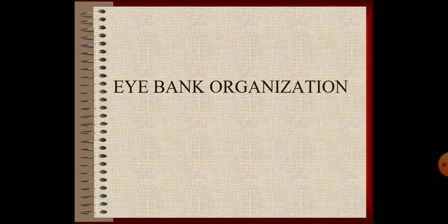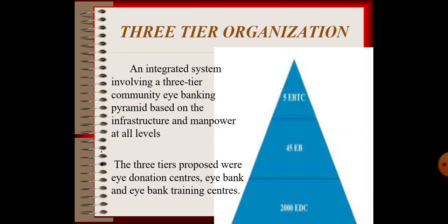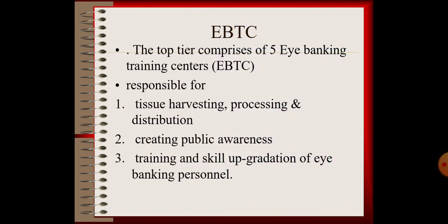Next, the eye bank organization. It is a three-tier organization — an integrated system involving a three-tier community eye banking network, based on infrastructure and manpower at all levels. The three tiers are: 2000 eye donation centers at the base, 45 eye banks in the middle, and 5 eye bank training centers at the top. The eye bank training centers are responsible for tissue harvesting, processing, and distribution, as well as creating public awareness, training, and skill upgradation of eye banking personnel.